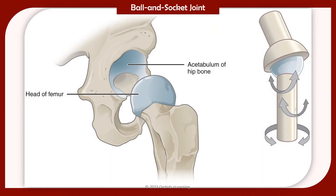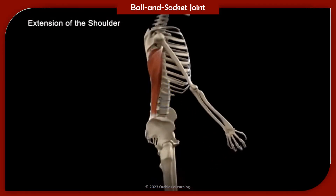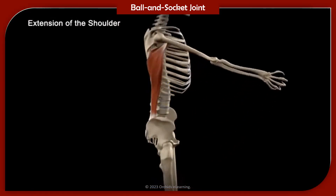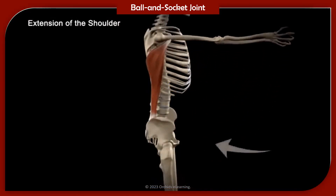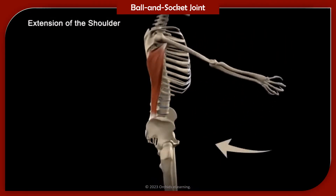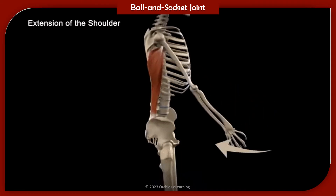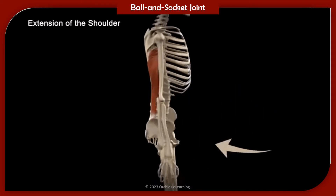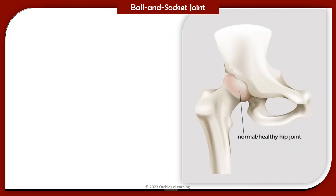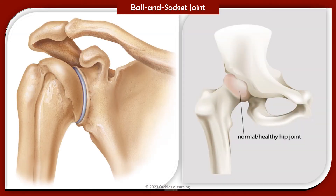In a ball and socket joint, the ball-like surface of one bone fits into a cup-like hollow in the other. A ball and socket joint allows maximum movement in all directions. Examples are the joints at the hip and shoulder.